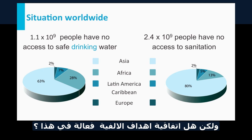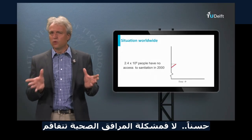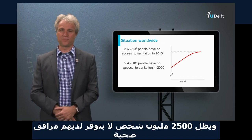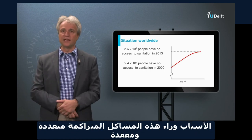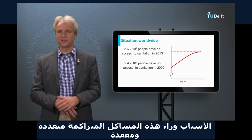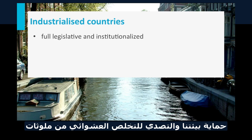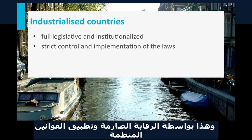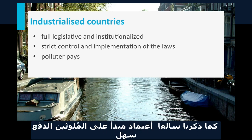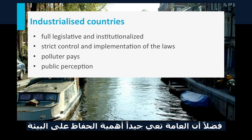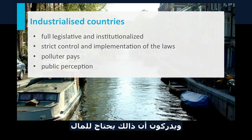Were the MDG agreements effective on sanitation? No. In fact, the situation aggravated — now some 2.6 billion people have no access to proper sanitation. The reasons for this backlog are multiple and complex. In industrialized countries, we have a full legislative and institutionalized backup to protect the environment and prevent non-controlled discharges, leading to strict control and implementation of laws. The polluter pays principle is widely adopted, and public perception is strongly in favor of environmental protection, even acknowledging that this costs money.